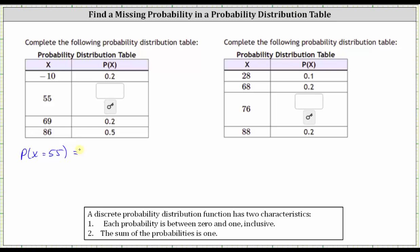And if we know the sum of the four probabilities must be one, then the missing probability must be one minus the sum of the other three probabilities, which would give us one minus the quantity 0.2 plus 0.2 plus 0.5. And 0.2 plus 0.2 plus 0.5 is 0.9, which gives us one minus 0.9, which is equal to 0.1.